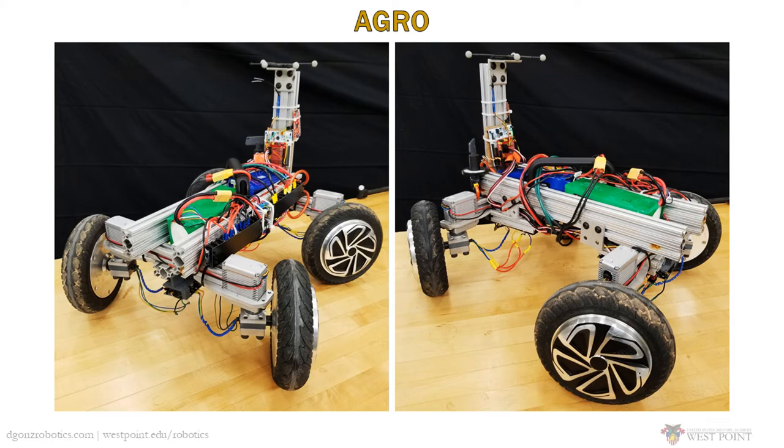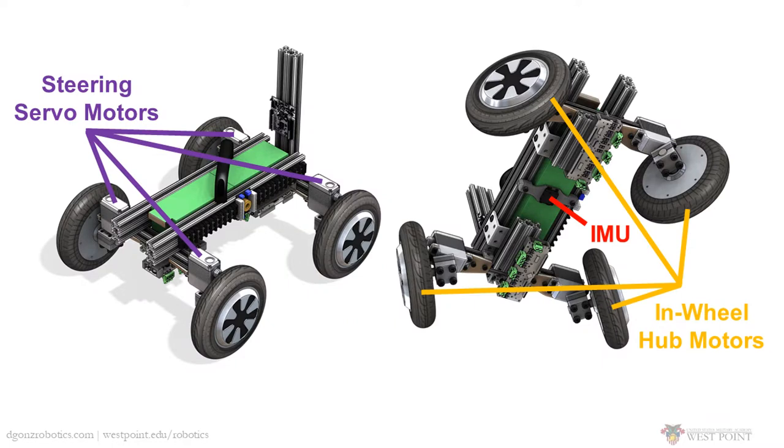We were inspired by the motion of cats. A cat can contort its body in midair to ensure that it lands on its four feet and evenly distributes the landing impact. We used a different principle to achieve this result on Agro that takes advantage of its unique architecture. Each wheel is driven independently by an in-wheel hub motor, and each motor can be steered independently with its own servo.